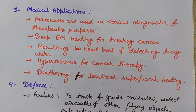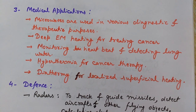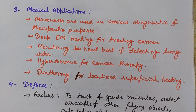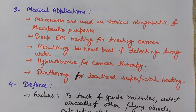Microwaves are also used for drying grains, pharmaceuticals, textiles, leather, and so on. Now for medical applications — microwaves are used for various diagnostic and therapeutic purposes. They are used in deep electromagnetic heating for treating cancer, for monitoring heartbeat, and to detect lung water. They are also used for hyperthermia in cancer therapy and for diathermy for localized superficial heating.